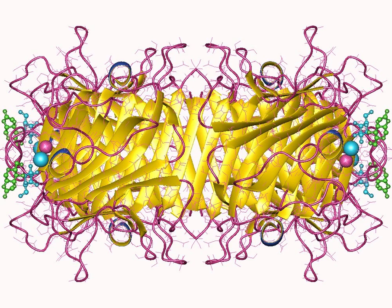Soybean agglutinins, also known as soybean lectins, are lectins found in soybeans. It is a family of similar legume lectins. As a lectin, it is an antinutrient that chelates minerals. In human foodstuffs, it is largely eliminated through fermentation and cooking processes.